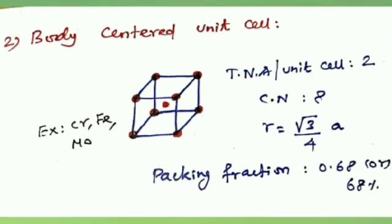The second type is the body-centered unit cell (BCC). It contains particles at all eight corners as well as the center of the unit cell. The total number of atoms per unit cell equals 2, the coordination number is 8, the radius equals (√3/4)a, and the packing fraction is 0.68 or 68%. Examples include chromium, molybdenum, etc.